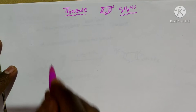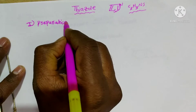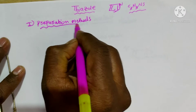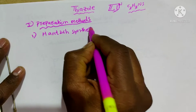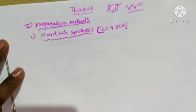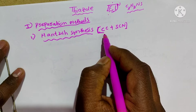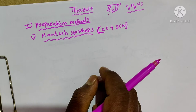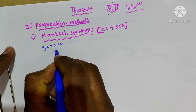First we go for the preparation methods. First we discuss the Hantzsch synthesis, also known as the CC plus SCN method. In this method we break the molecule to provide the CC linkage, and we use alpha-chloroacetaldehyde or alpha-chloro ketones — here we take alpha-chloro acetone.